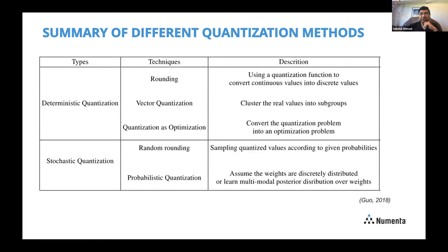This table from the Guo paper gives a nice breakdown of different quantization approaches. He splits them into deterministic versus stochastic quantization. In the deterministic category, rounding is the most basic, then uniform quantization and vector quantization. Quite an interesting one is quantization as optimization, where you treat quantization as part of the overall back-propagation or optimization algorithm. And then there are a bunch of stochastic techniques as well.